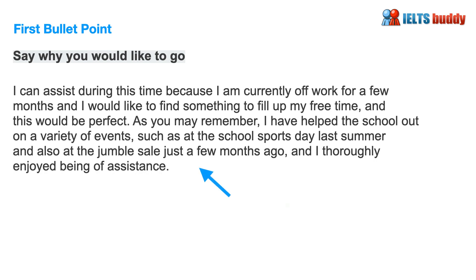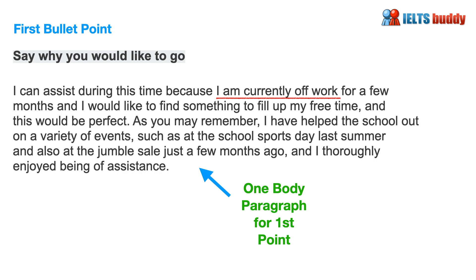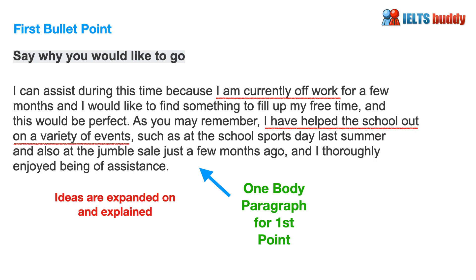The first bullet point is to say why you would like to go. One body paragraph has been written for this first point. It's worth noting that sometimes the purpose of the letter could be combined with this first point — there might only be three body paragraphs — however for a band 8 or 9 letter I'd recommend separating them. In this case they've explained: 'I can assist because currently I am off work for a few months and would like something to fill up my free time.' The person also notes they've helped the school on events such as sports day and a jumble sale. Ideas must be expanded on and explained — for a band 8 or 9 you should give lots of support.